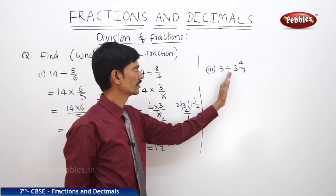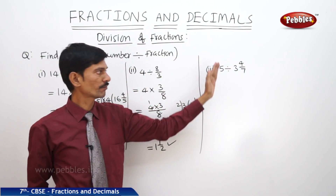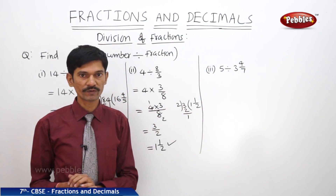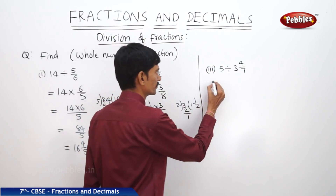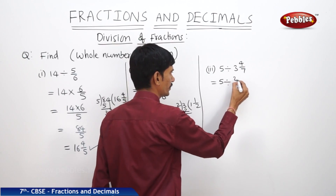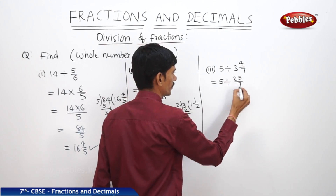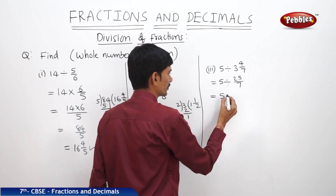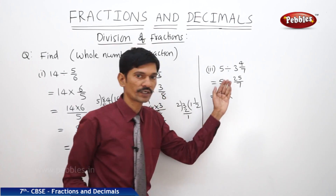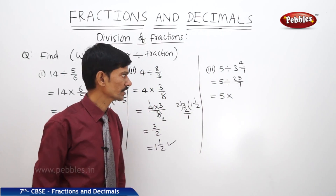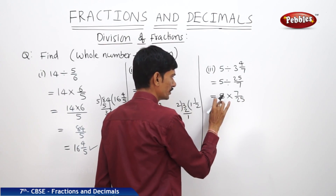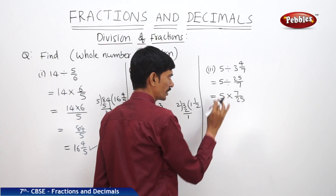Next: 5 divided by 3⁴⁄₇. Here a whole number is divided by a mixed fraction. First we convert the mixed fraction into an improper fraction: 7×3 = 21, plus 4, gives 25/7. Now 5 is multiplied by the reciprocal of 25/7, which is 7/25.